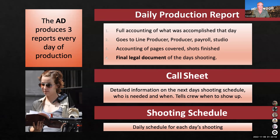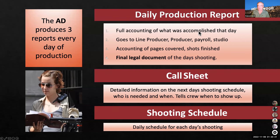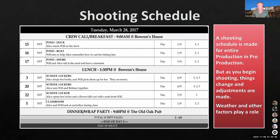The AD produces three reports every day — good quiz question. You have the daily production report, the call sheet, and the shooting schedule. The shooting schedule is exactly what it sounds like. The call sheet is detailed information on the next day's shooting, telling the crew when to show up — their call time. The daily production report is a full accounting of what was accomplished that day — pages covered, shots finished — and it goes to the line producer, payroll, and the studio. It acts as the final legal document for the day's shooting.